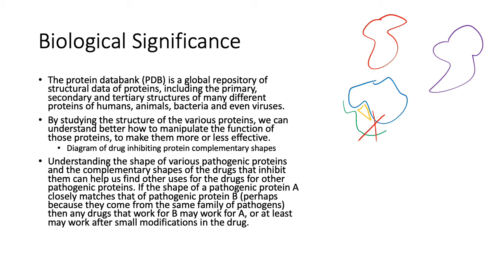If the shape of pathogenic protein A closely matches that of pathogenic protein B, then any drugs that work for B may work for A, or at least may work with a small modification within that drug. Maybe these two look quite similar—that's A and B. Maybe the attachment site is over here with the molecule. If that's A and B, and you know the blocker for A—here's my drug that fits in that A shape—you're like, oh, that will probably fit in there. Not really, but with a few modifications, yep, that'll fit better.